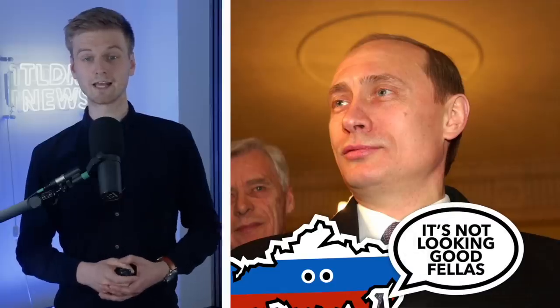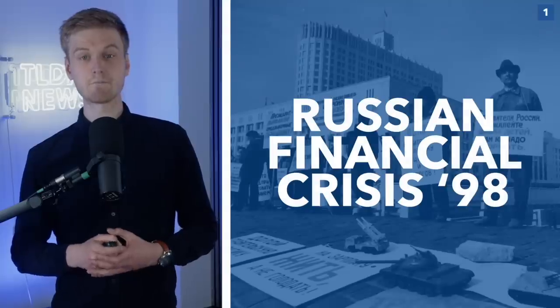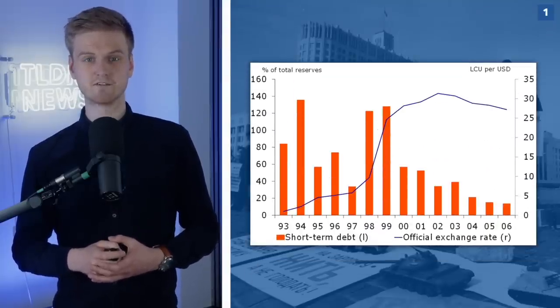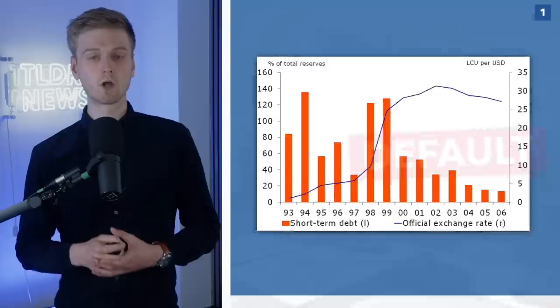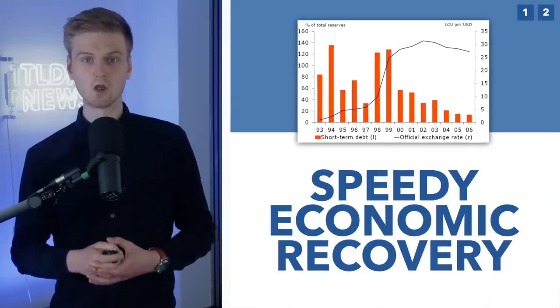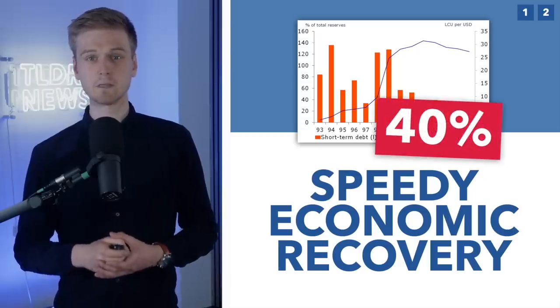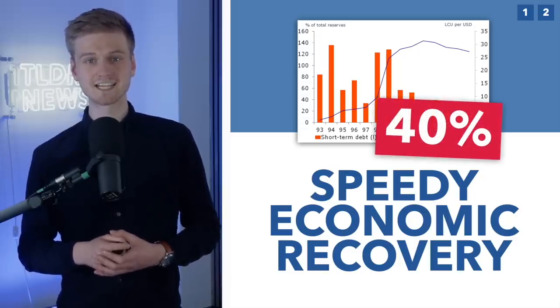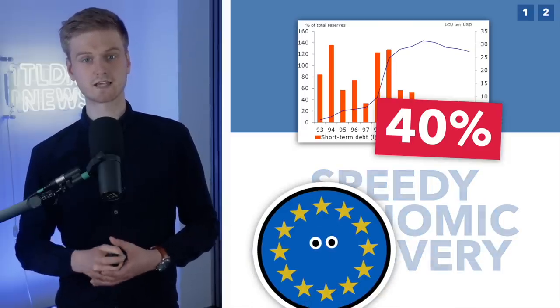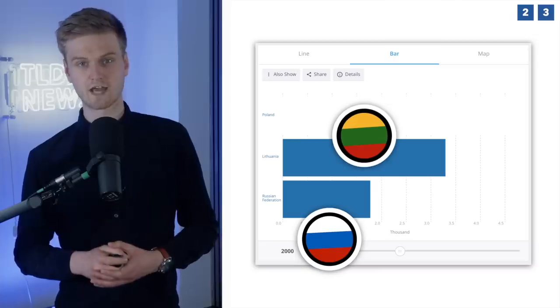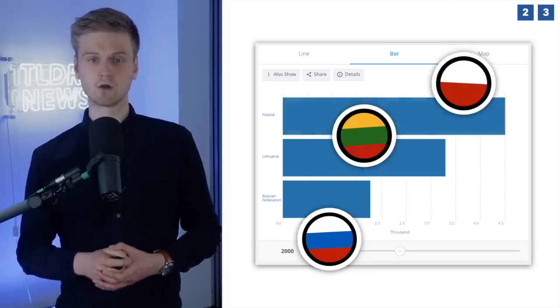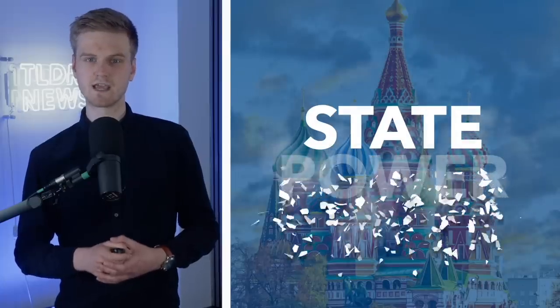When Putin came to power in 2000, the Russian state was a mess, economically and politically. In 1998, after a massive financial crisis, the ruble collapsed in value, inflation jumped to 84%, and the Russian state defaulted on its domestic debts. While the Russian economy recovered surprisingly quickly, when Putin came to power, Russia's GDP and GDP per capita were still about 40% below their 1997 highs, leaving Russia significantly poorer than its European neighbours. To give you some context, in 2000, Russia's GDP per capita was about $1,800 — roughly half that of Lithuania and slightly more than a third of Poland. Politically, the Russian state wasn't in great nick either.